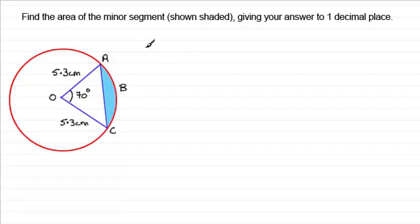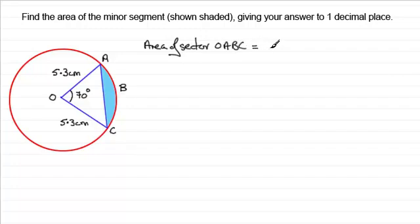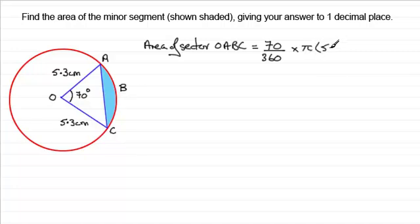Let's start with the area of sector OABC. That area will be a fraction of the complete area of the circle. That fraction is 70 degrees compared with a full turn of 360 degrees — so 70/360ths of pi r squared. The radius is 5.3, so we have pi times 5.3 squared. Working this out on the calculator gives 17.159 centimeters squared.